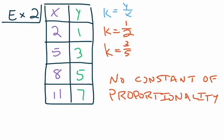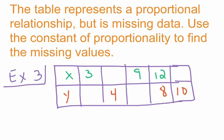In our next example, we have a table that is a proportional relationship but with some missing data values. The only place where we have both values to find K is one known pair, which gives us K = 8 over 12. Dividing both by 4, K = 2/3. Then we use the equation Y = 2/3 X to find the missing values.